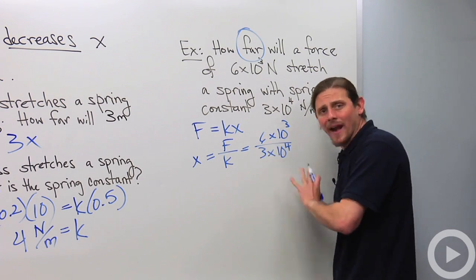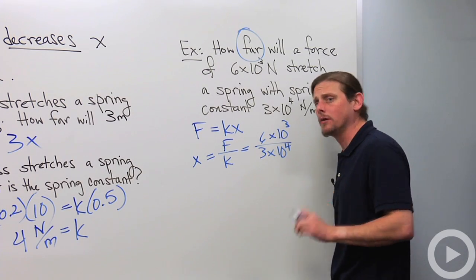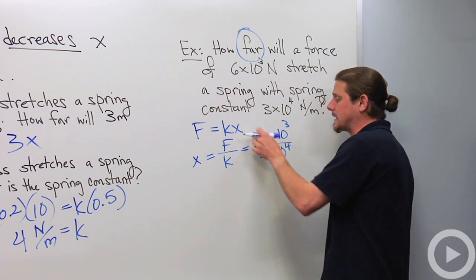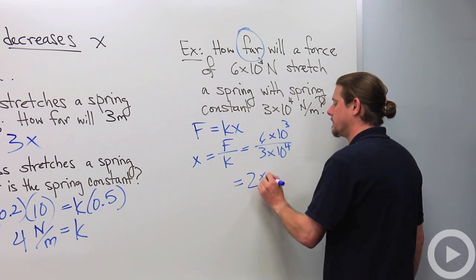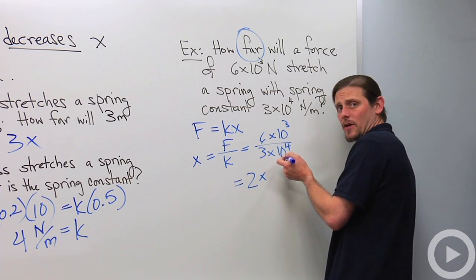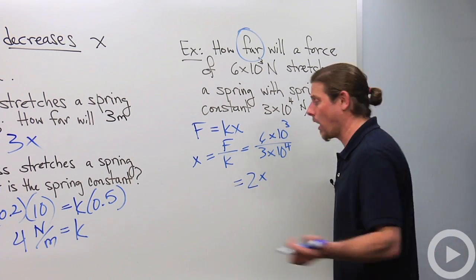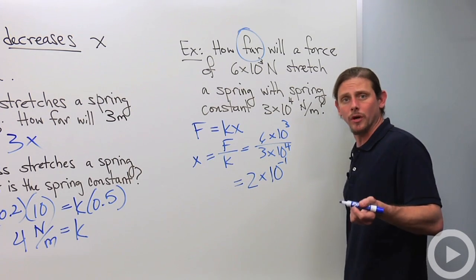As with any time you've got scientific notation, you always do the numbers first and then the tens. 6 divided by 3, 2. 10 to the third divided by 10 to the fourth, that's 10 to the 3 minus 4. So it's 10 to the minus 1. What's the unit? It's X.